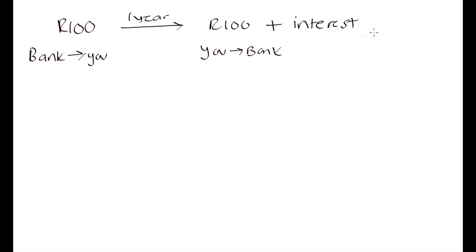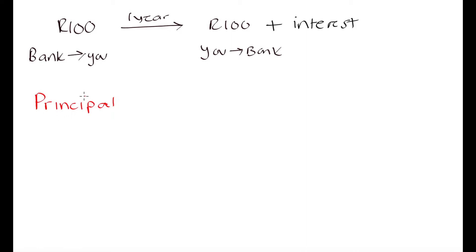This interest acts as profit for the bank — they're not only going to get back the 100 Rand you borrowed, but also an additional amount called interest. That is the incentive for the bank to make this transaction. Interest is simply the additional money you pay on top of what you initially borrowed. The initial amount that was loaned out also has a special name: the principal, or principal amount.